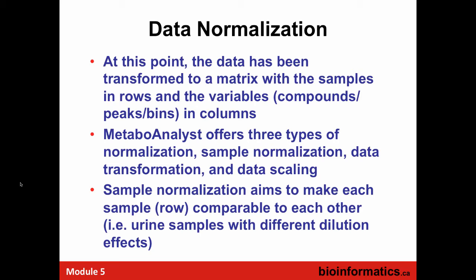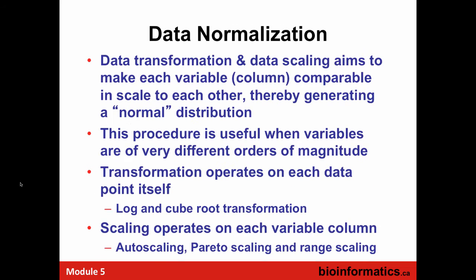Normalization of a sample means dealing with dilution effects. In the case of rumen, the cow may have been drinking a lot of water or not, so the rumen fluid concentration is potentially up and down. For data transformation and data scaling, we're trying to make each variable — in this case the compound column — comparable to each other, trying to create a normal distribution. As Jeff highlighted, we can't do statistics unless things are pretty close to a normal distribution. That's the basis for ANOVA, t-tests, even elements of PCA and PLSDA.